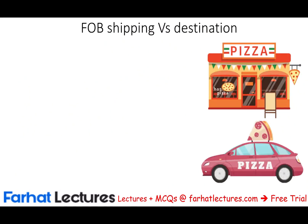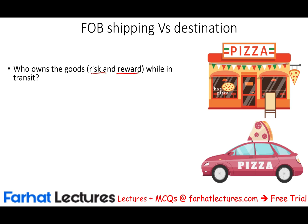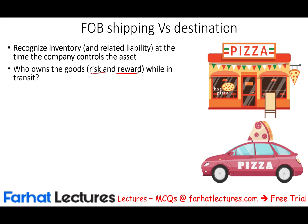For FOB shipping versus FOB destination, the question becomes: when you purchase something and it's in shipment, whose inventory is it? Sometimes you might purchase something and it may take a week, weeks, a month, maybe six months for that item to arrive. So during shipment, who owns the item — who owns the goods while in transit? Who owns the risk and the reward? Whoever owns the risk and the reward is in control of the asset. Recognize inventory and the related liability at the time the company controls the asset — because whoever is in control of the asset has the risk and has the reward.